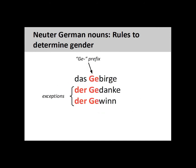Many collective nouns with a ge- prefix, such as Gebirge meaning Group of Mountains or Mountain Range, are neuter. A collective noun is a collection of things taken as a whole. There are, however, many other nouns such as Gedanke meaning Thought, and Gewinn meaning Profit, that are not neuter.